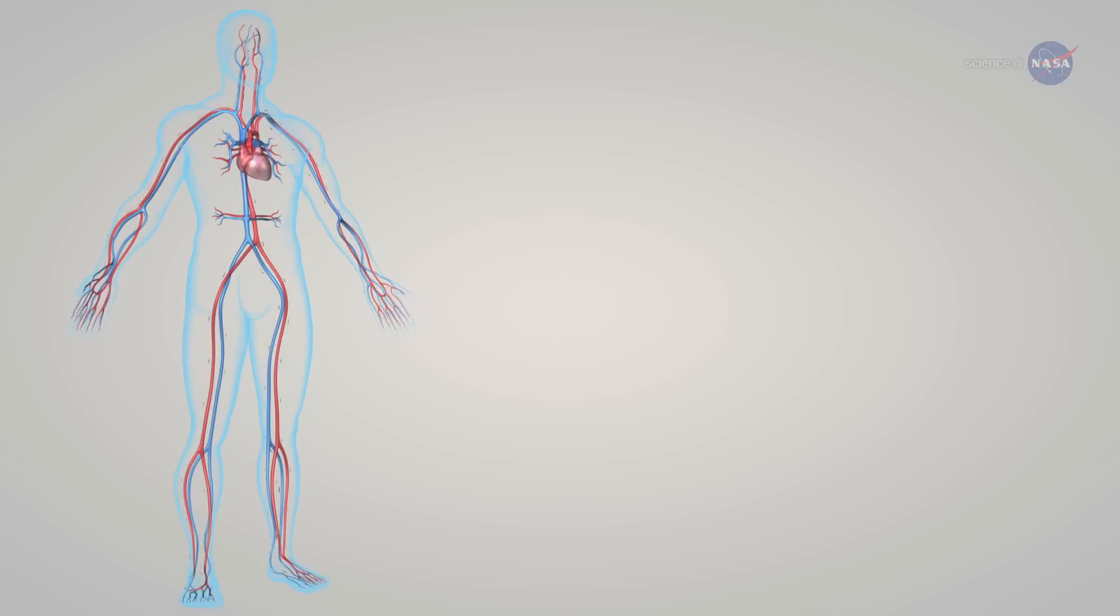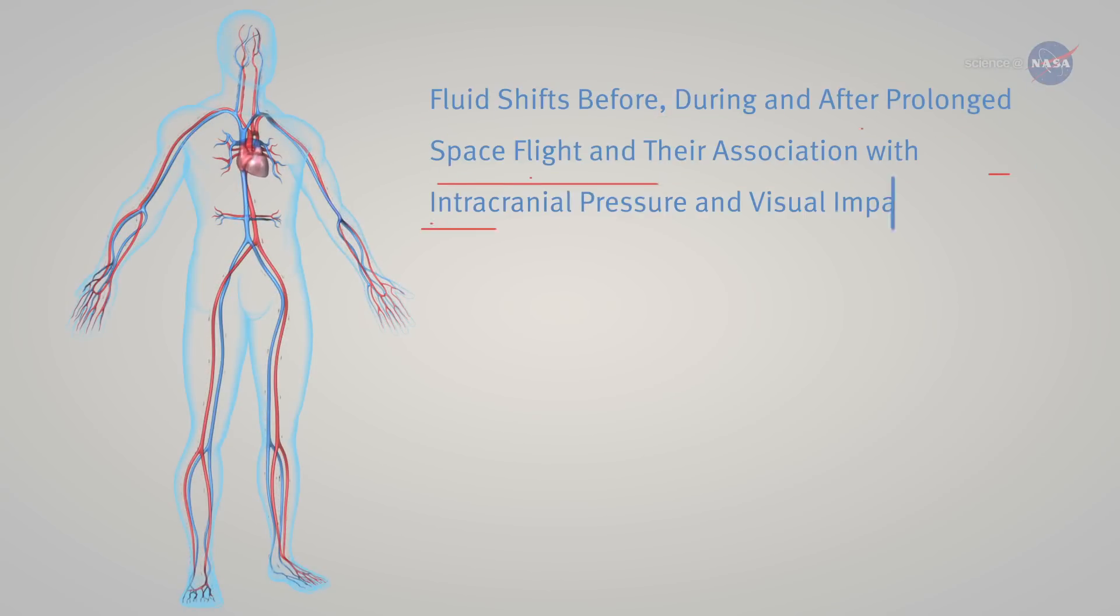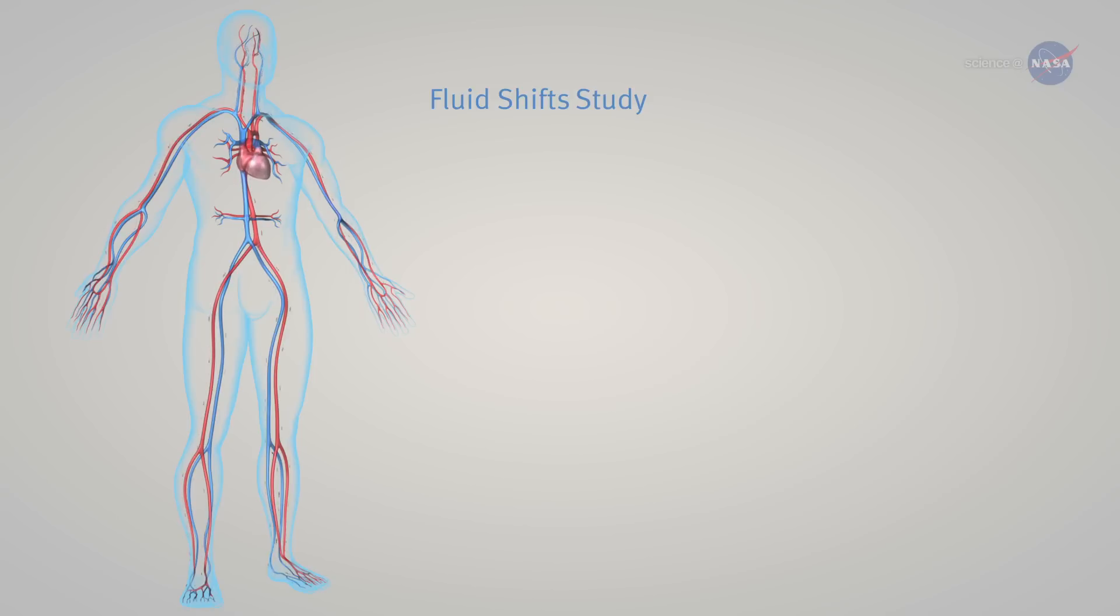Stenger is one of the principal investigators of an International Space Station experiment with a very long name that we'll call Fluid Shifts Study for short. It's investigating vision problems in space.